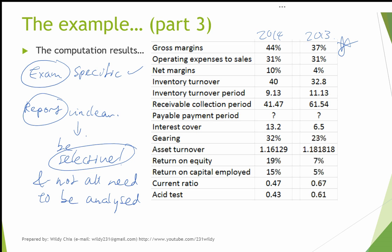I'm going to pick certain ratios to analyze. The gross margins have favored by 7%, so it's important to explain why the gross margins have changed — because if you're a shareholder and you notice the gross margins have changed, you'll be concerned about what the business has done to get higher margins. Operating expenses to sales are constant, so it may not be so relevant. Net margins have increased by 6% — this is deserving of some analysis and interpretation. Inventory turnover has gone higher — this is worth explaining, and these two can be grouped together.